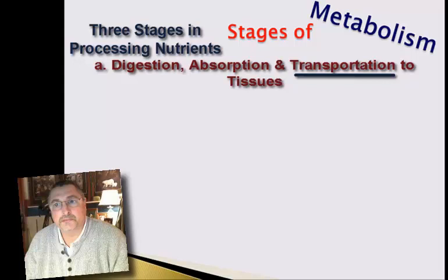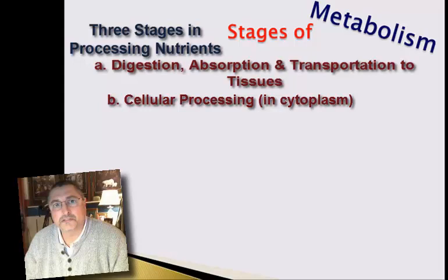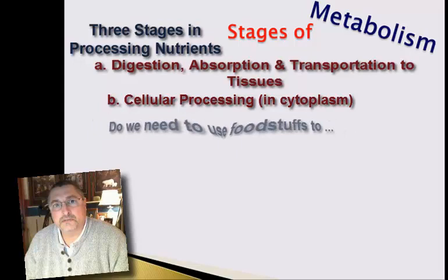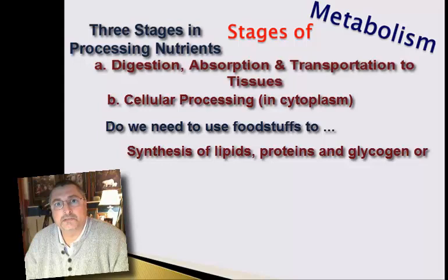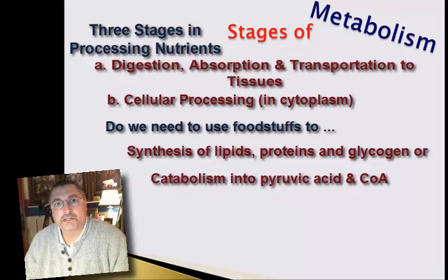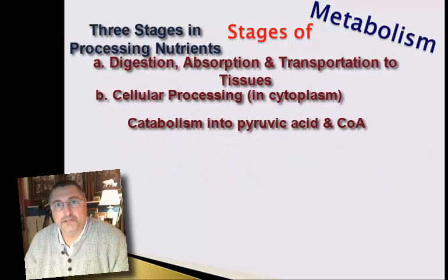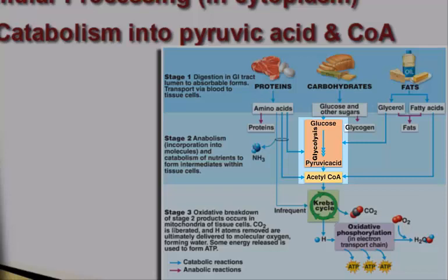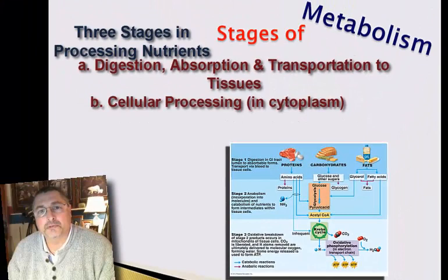Once inside the cell, the second phase begins: cellular processing. The processing occurs at the cytoplasmic level — do we need those foodstuffs to build larger structures, such as proteins or other cellular materials? Or do we need them to generate energy through the catabolic reactions? If we do the catabolic reactions, the end products at this stage would be things such as pyruvic acid and acetyl-CoA. This occurs in the cytoplasm, but to maximize the potential energy we can get, we carry those pyruvates and acetyl-CoA into the mitochondria.